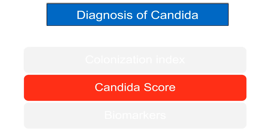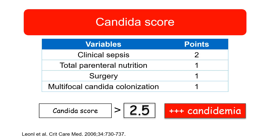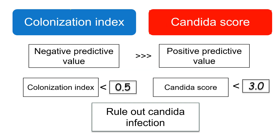The Candida score includes four variables: clinical sepsis (2 points), total parenteral nutrition, recent surgery, and multifocal Candida colonization (1 point each). A Candida score greater than 2.5 indicates high risk of candidemia. Importantly, for both the colonization index and the Candida score, the negative predictive value is higher than the positive predictive value — meaning a colonization index less than 0.5 or a Candida score less than 3 can rule out Candida infection.